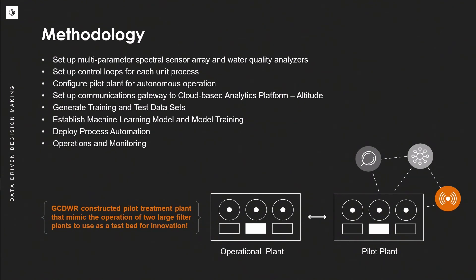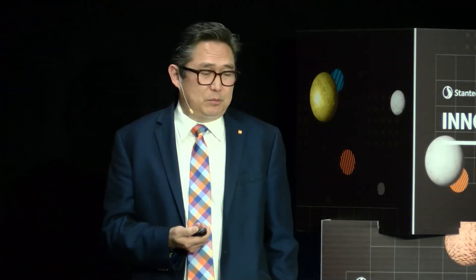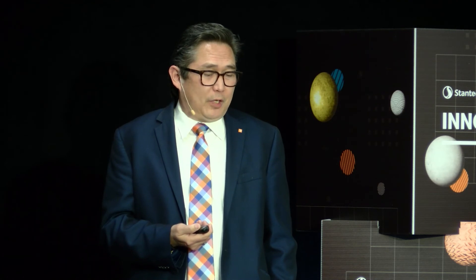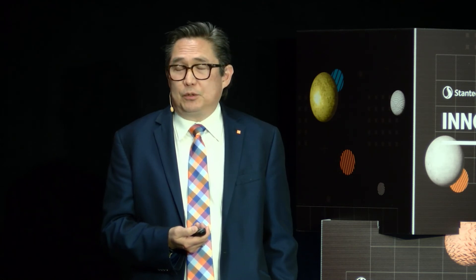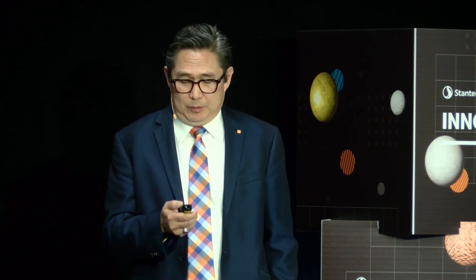We're going to fully deploy the process automation. We've done a bunch of changes to the plant, so we want to make sure it's operating correctly, and then we're off to the races with operations and monitoring. The county constructed these pilot plants to mimic the two larger water plants, allowing them to run different types of scenarios.